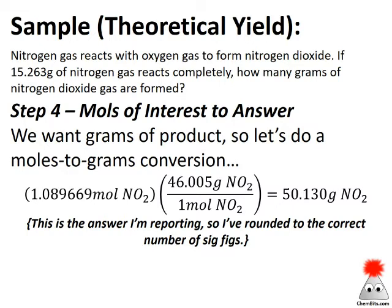Last step: get to whatever our answer is. The problem specifically asks for grams of nitrogen dioxide, so let's do that moles-to-grams conversion using the molar mass of NO₂ (46.05 g/mol) from the periodic table. Make sure your units cancel appropriately so it's 46.05 over 1 and not 1 over 46.05. That gets me to my answer, rounded to 5 sig figs as appropriate. As a reasonableness check: starting with 15 grams of nitrogen, all that nitrogen plus 2 oxygens go into the product, so we'd expect something a little more than 3 times the mass — and sure enough, 50 is a little more than 3 times 15.